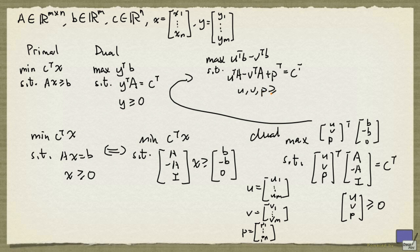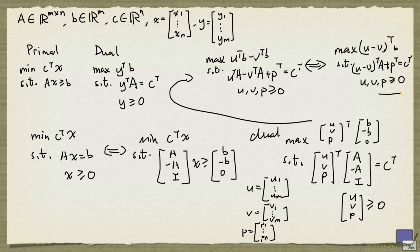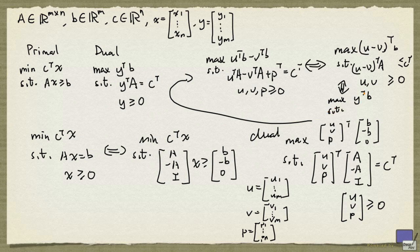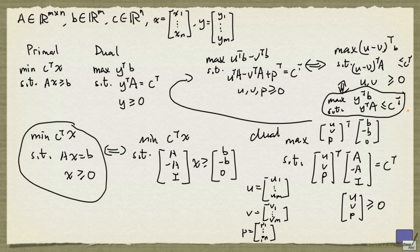This can be rewritten as follows. Because the entries in p are non-negative, we can eliminate p by turning the constraint into a less-than-or-equal-to inequality, so we don't need the p variables. And since u minus v is the difference of two non-negative vectors, we can replace it with a y that is not restricted to be non-negative. So this problem is equivalent to maximizing y-transpose b, subject to y-transpose A ≤ c-transpose. We define the dual of the equality-constrained primal to be this problem.